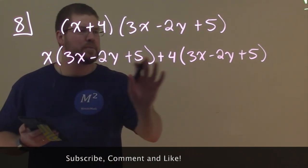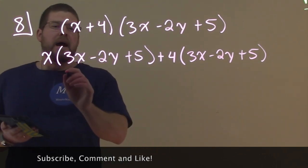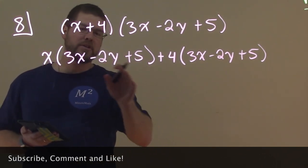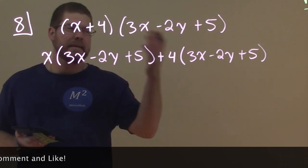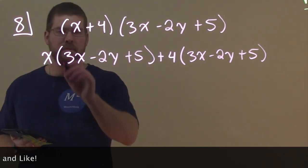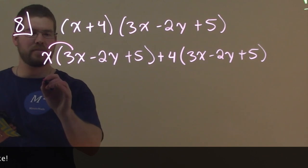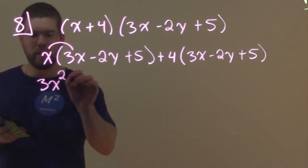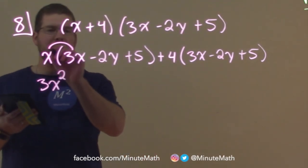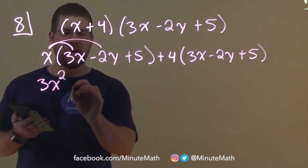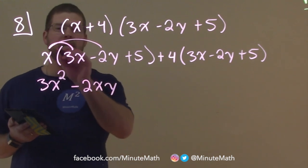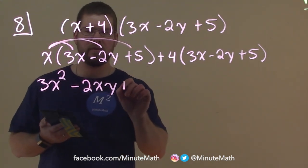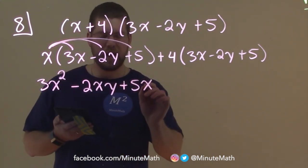So now let's deal with each parenthesis individually. First thing again, you always want to check any like terms in the parenthesis to simplify. Nope, neither for this one. So now we can distribute. x times 3x is 3x squared. x times a minus 2y is a minus 2xy, and then x times a 5 is just a 5x.